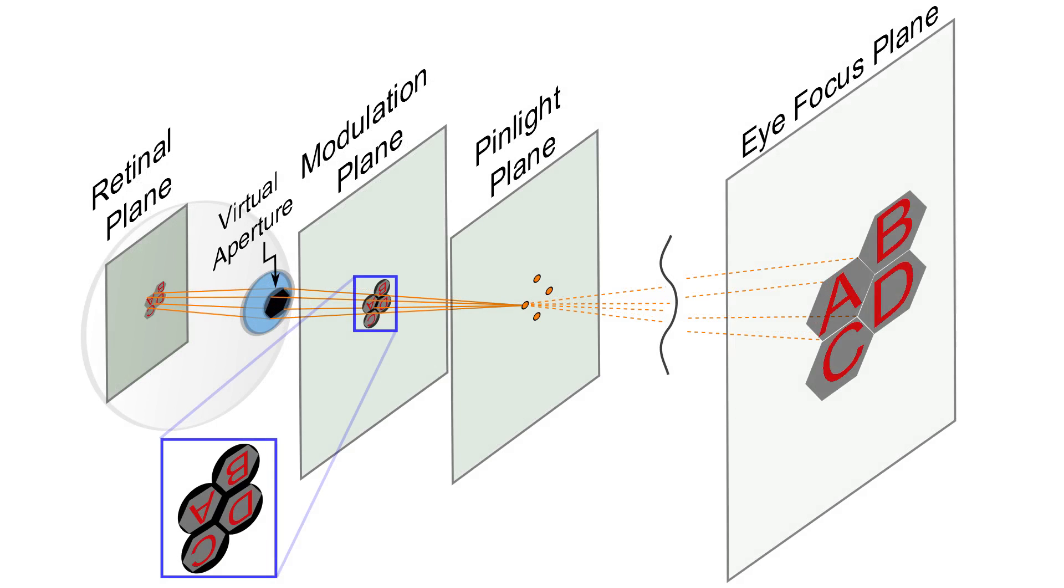The light sources are tiled to create a wide field of view, forming an array of miniature transparent projectors that direct light into the eye through a virtual aperture encoded on the spatial light modulator.